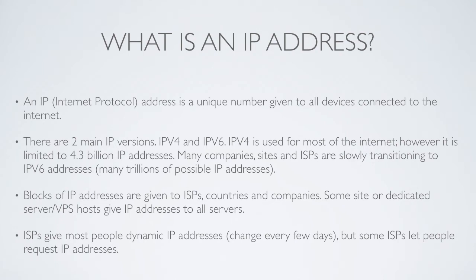IPv4 is limited to 4.3 billion IP addresses. This doesn't mean that that number of people connect to the internet — universities can be given a large amount of IP addresses and might not even use all of them, but other people cannot use them. The companies that give out IP addresses are trying to limit how many they give to companies. Many companies, sites, and ISPs are slowly transitioning to IPv6 addresses, which has many trillions of possible IP addresses. This sounds like it will be enough for a long time, however large blocks given to small groups of people could be used quite quickly — though trillions is quite unlikely to run out even if every person is given about 10.